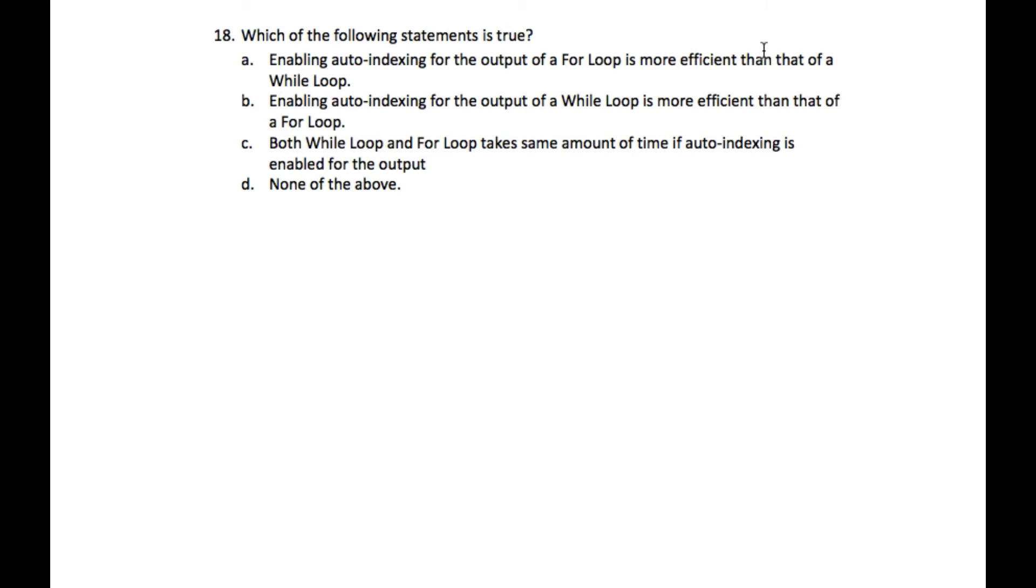But when we're using the for loop we already know the maximum number of times it should run. So in that context whenever we're using the auto indexing for loop, since we know how many times it is going to run, it is going to be far more efficient than using the while loop.